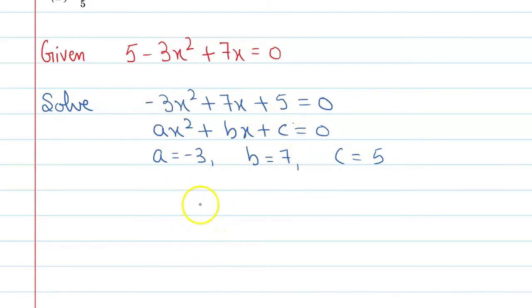Sum of the roots means α + β is equal to -b/a for any quadratic equation. And here b's value is 7 and a's value is -3, so you can say this minus and minus will get cancelled, so the value is 7/3.